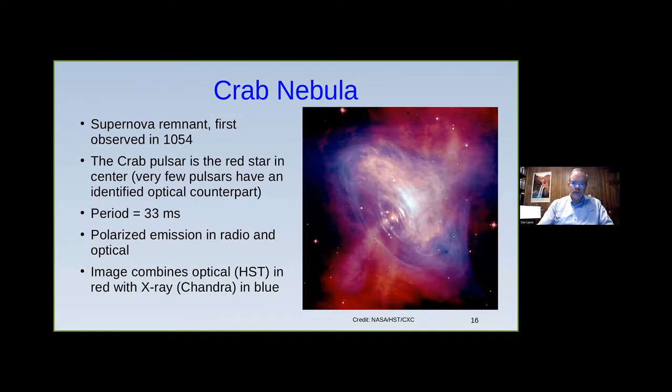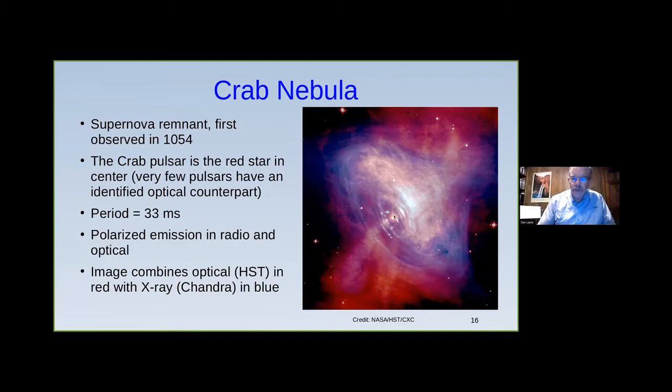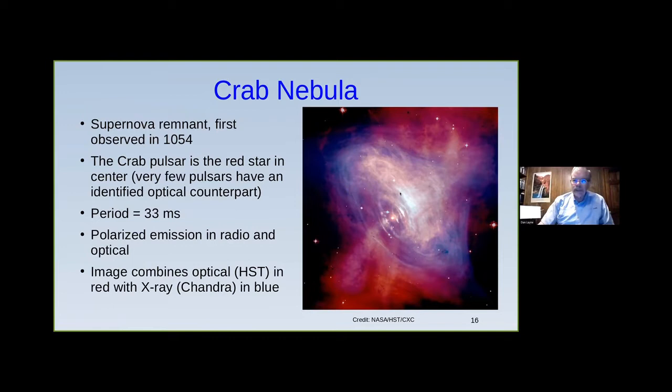The Crab Nebula is from the supernova remnant first observed in 1054. The Crab pulsar is this red star right in the center — only a handful of pulsars have an identified optical counterpart. It's close enough to actually find the neutron star optically. The period is 33 milliseconds. This image combines Hubble Space Telescope optical data in red and X-ray data from the Chandra space satellite in blue.